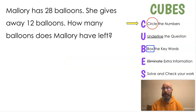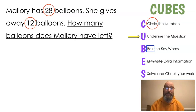Our first thing we want to do is circle the numbers. Do you see any numbers in that question? I see two. What are they? Hopefully, you said 28 and 12 because those are the two numbers that we see. Next, we're going to underline the question. If you're looking for a question to underline, here's my little secret - look for the question mark. When you find the question mark, there's your question. Our question in this word problem is, how many balloons does Mallory have left?